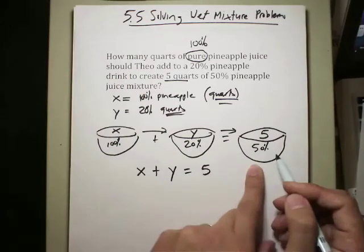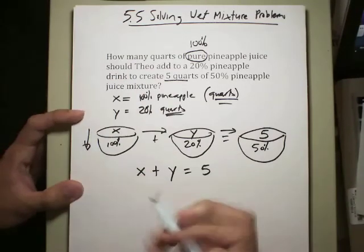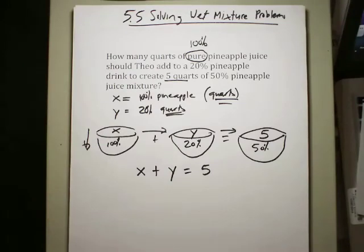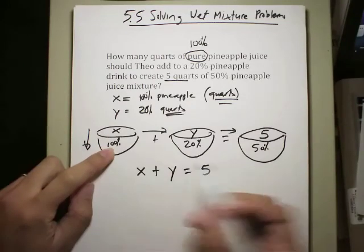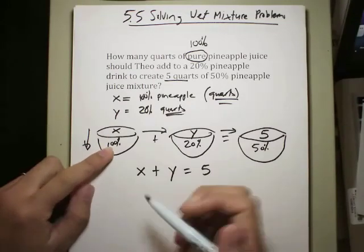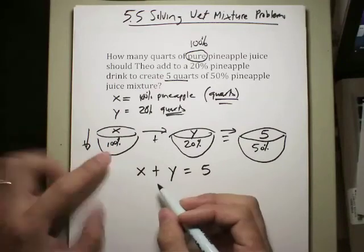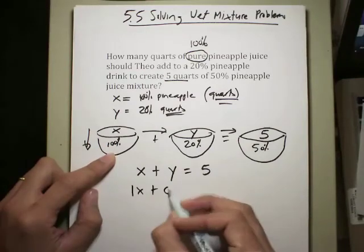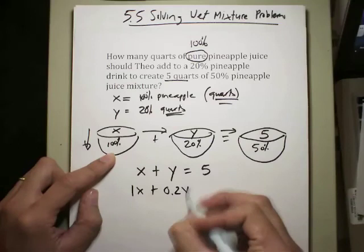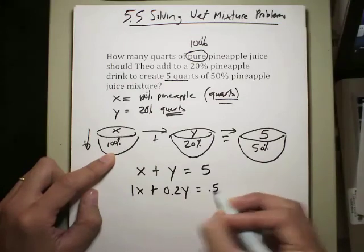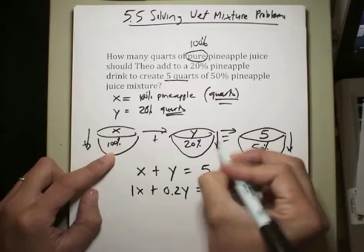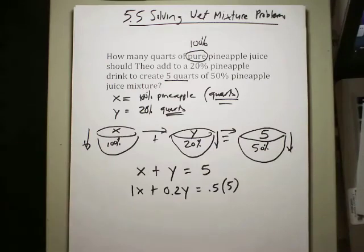And when we multiply down, remember one last thing that I want to remind you: don't forget 100%, when you write it as an equation, you've got to convert percent back to decimals. So 100% simply means one whole. And 20% means 0.2 times Y. And of course the last one is going to be 0.5 for 50% times 5 quarts. We're multiplying down, if you notice. We have ourselves, once again, two equations.